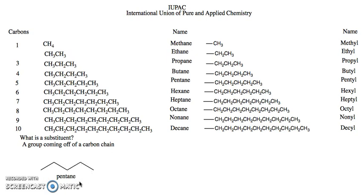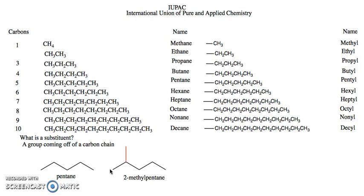We could draw another molecule with a substituent coming off of pentane. This molecule is 2-methylpentane — it's still a pentane because we have a five-carbon chain, but the substituent coming off of it is the methyl group highlighted in red. It's named methyl, not methane, because it's a substituent coming off the main chain.